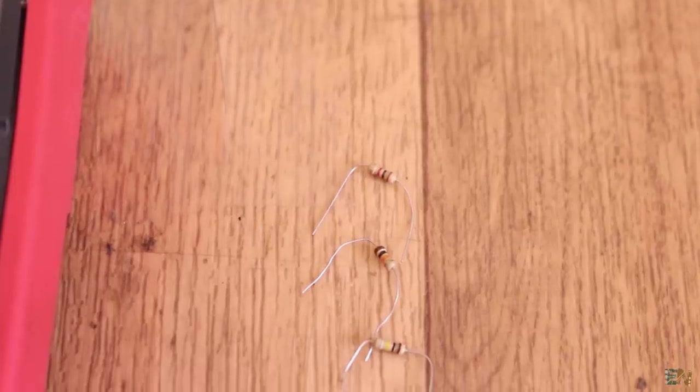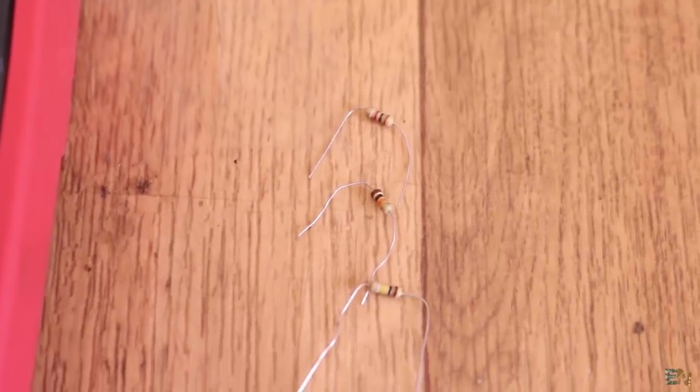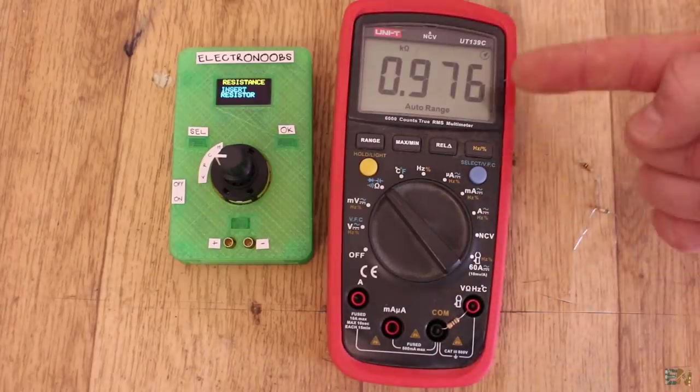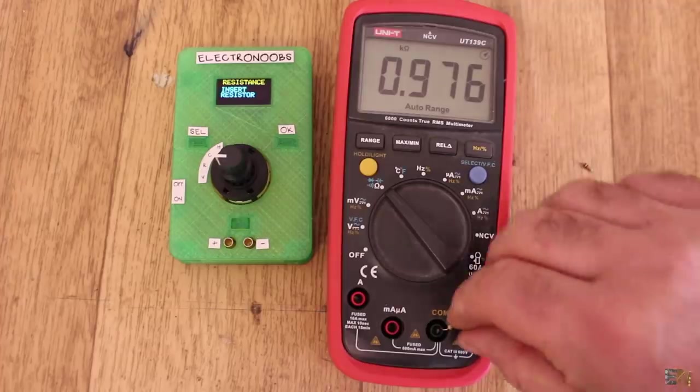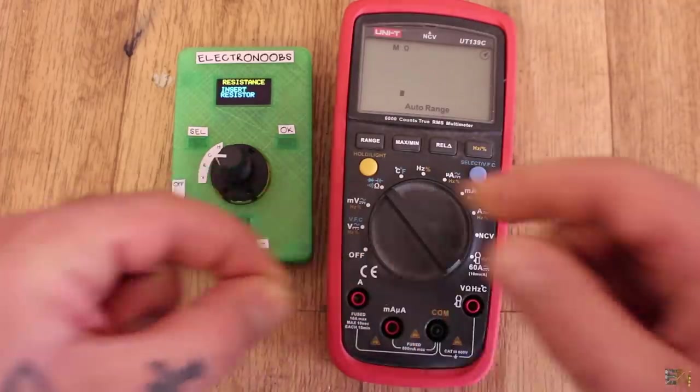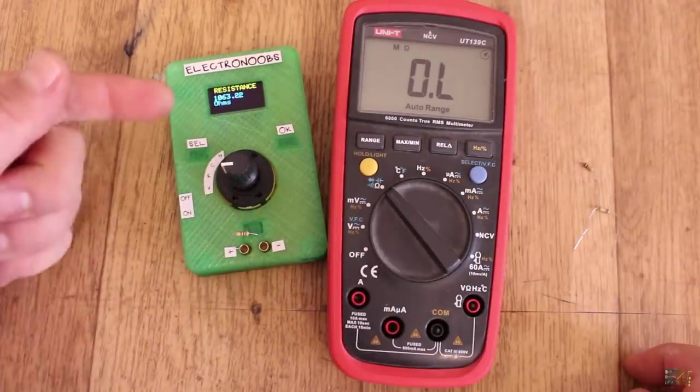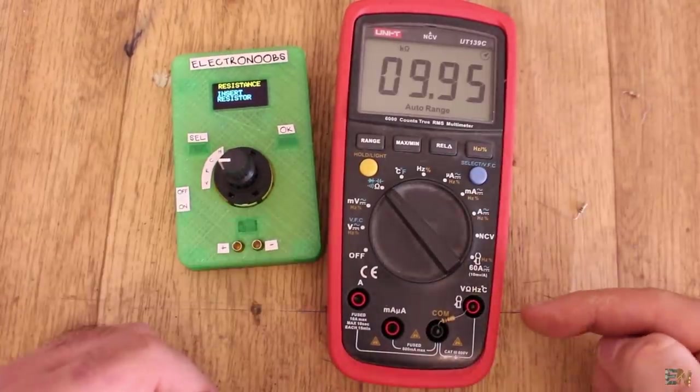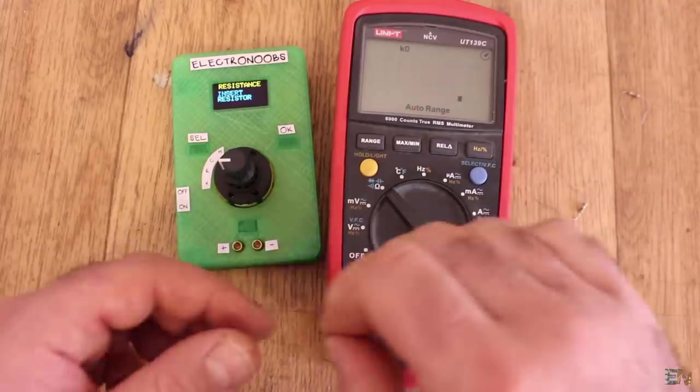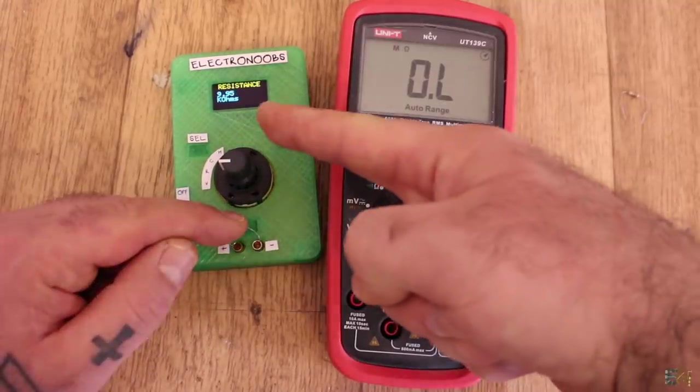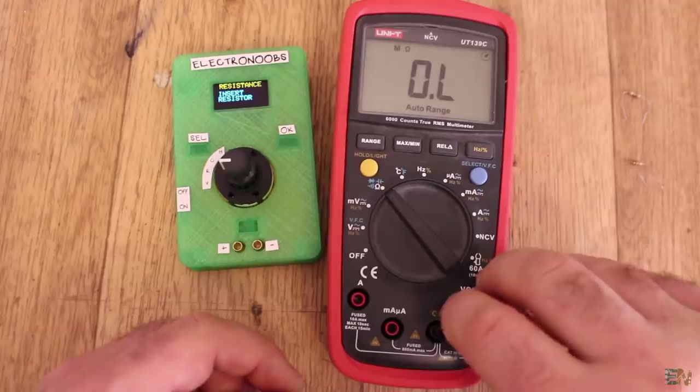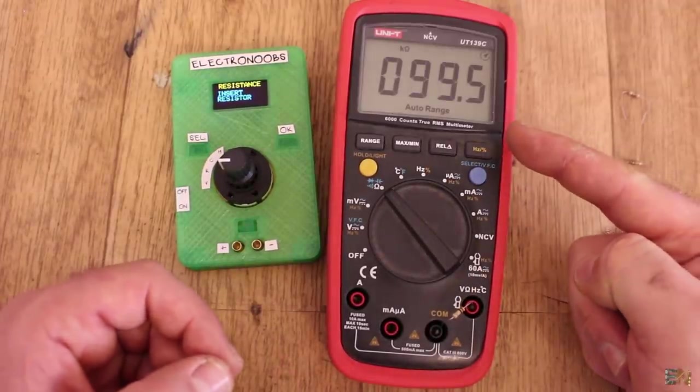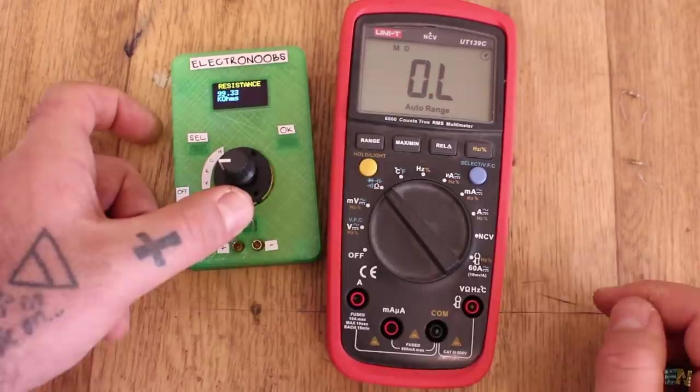Now let's test resistance. I have 3 values: 1K, 10K and 100K. I first measure the values with my commercial multimeter and we have almost 1K. I do the same with my homemade one and we have 1000 ohms as well. Now for the 10K resistor, I measure 9.9 and we have pretty much the same for the homemade multimeter as well. Finally, for the resistor of 100K, we have 99K. I measure that with my homemade one and we have the same.